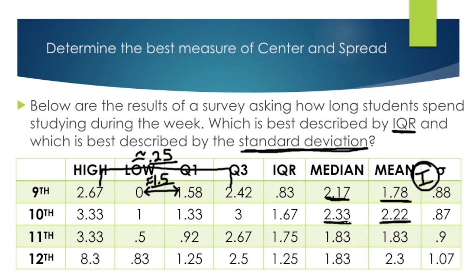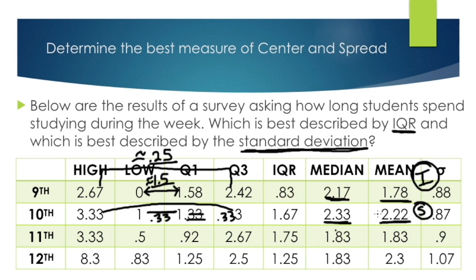For 10th graders, the median is 2.33 and the mean is 2.22 — pretty close. Checking the whiskers: the low whisker length is 0.33, and 3.33 minus 3 also gives 0.33, so the whiskers are equal. Equal whiskers and close mean and median means standard deviation is the way to go. For 11th graders, both the mean and median are 1.83 — exactly the same — so standard deviation is automatically the best choice without even checking whiskers.